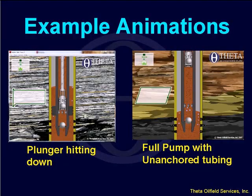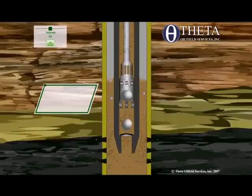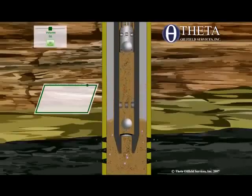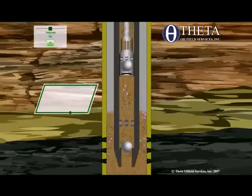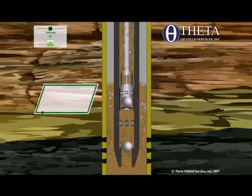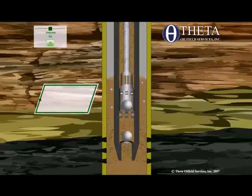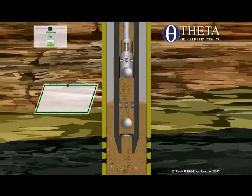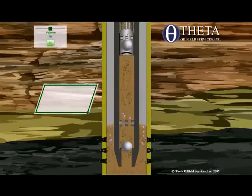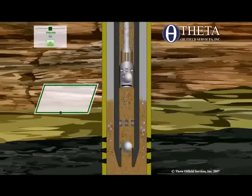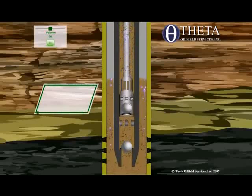If you have unanchored tubing, the tubing is going to move, and this animation shows that. On the upstroke, as you pick up the fluid load, you're taking the load off the tubing, so the tubing is going to move up. On the downstroke, you're putting load back on the tubing, so the tubing will stretch. That's why you have the slants on the card showing gradual increase of load on the left side and gradual decrease of load on the right side.